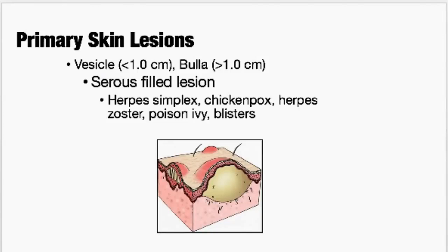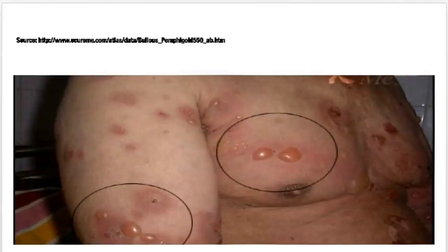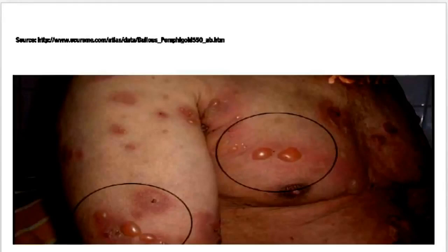Other primary skin lesions: vesicles and bullae. These are serous-filled lesions — filled with clear fluid. A vesicle can be as large as a pea; a bullae is bigger than that, like a big blister on your heel. Bullous pemphigoid is a blistering disease common with elderly patients — it's an autoimmune disease that causes these large bullae lesions that are serous-filled. Very itchy and pruritic and causes a lot of symptoms. I see it a lot in nursing homes.